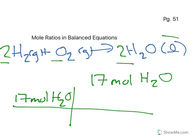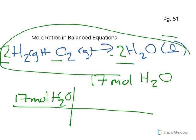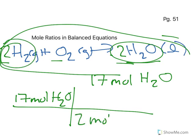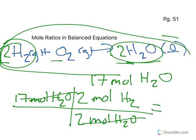And I know, according to this equation, that for every 2 moles of H2O, there are 2 moles of H2. So how much hydrogen gas would I need? 17 times 2 divided by 2 would just be 17 moles of H2. Let's make it a little more complicated.